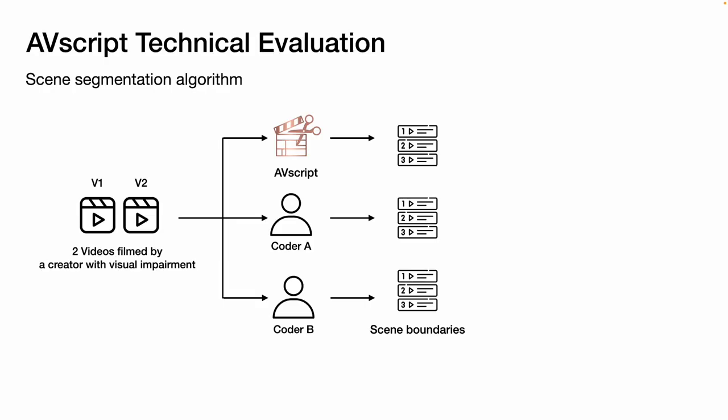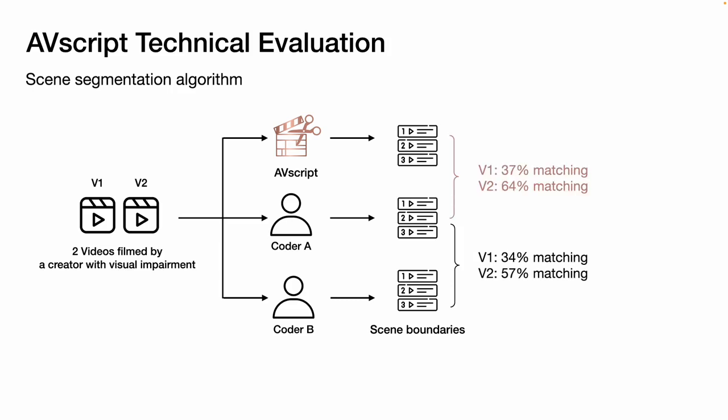We evaluated our scene segmentation algorithm with two sample videos filmed by a creator with visual impairment. We compared our predicted scene boundaries to those created by two coders. The present similarities were comparable between the two coders, between AVScript and coder A's boundaries, and between AVScript and coder B's boundaries.